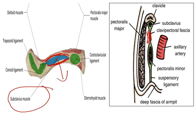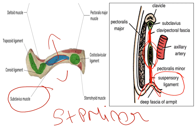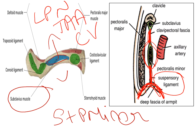To summarize clavipectoral fascia: it splits to enclose two muscles — subclavius and pectoralis minor. It is attached to the two lips of the subclavian groove on the clavicle, enclosing subclavius. It then continues as a single layer, splits again to enclose pectoralis minor, rejoins as the suspensory ligament, and attaches to the axillary fascia. Structures piercing it: lateral pectoral nerve, thoracoacromial artery, and cephalic vein.